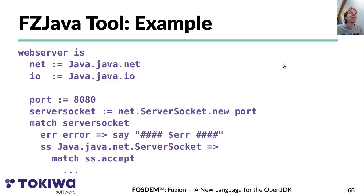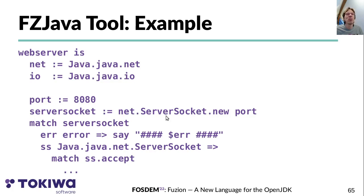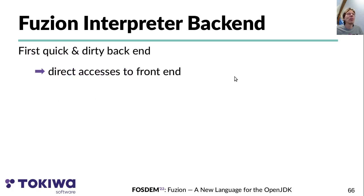An example of using Fusion and fz_java to implement a web server using the java.net and java.io APIs: for convenience we create copies of 'java_net' and 'java_io' packages in two fields 'net' and 'io'. To open a socket at port 8080, we use 'net.ServerSocket.new' at that port and then match the result to check if an exception occurred — printing an error if so, otherwise getting a server socket instance. We call 'accept' on that, which can also throw, so we match again and then extract the input stream. The code is very similar to what one would write in Java.